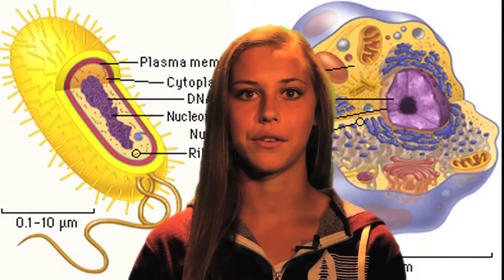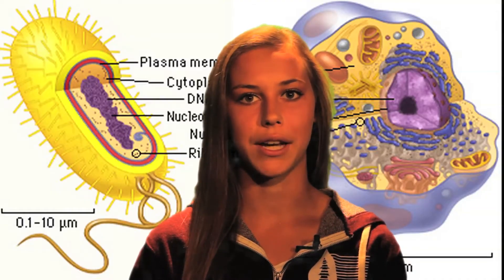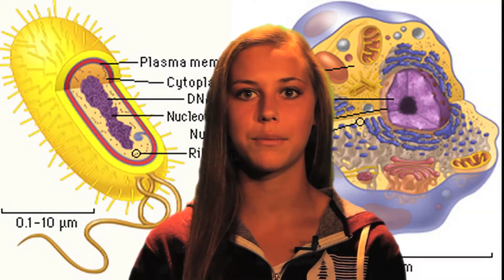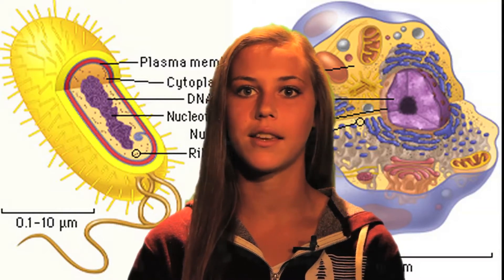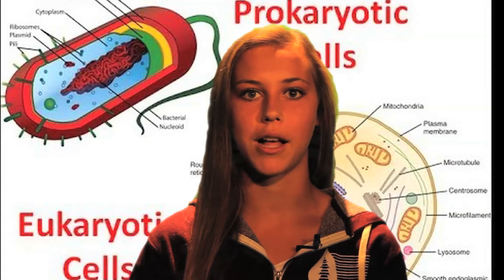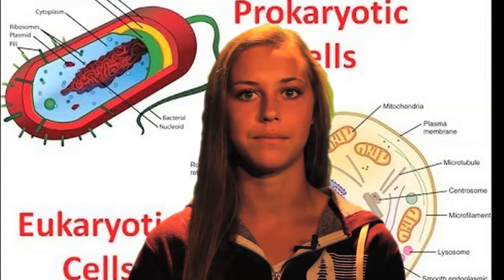Prokaryotes differ from eukaryotes in that they lack a distinguishable nucleus, leaving the DNA to float in the cytosol, the inner plasma of the cell.